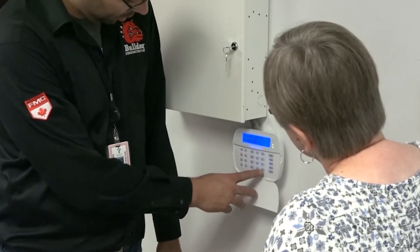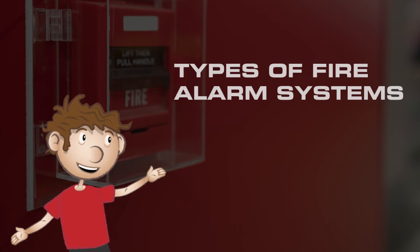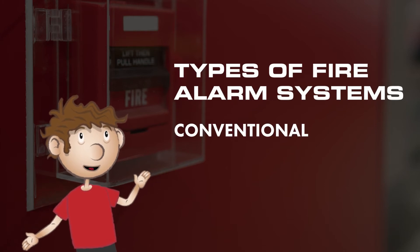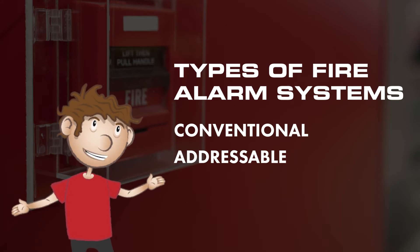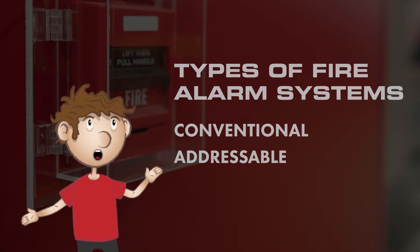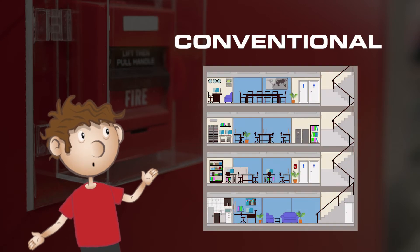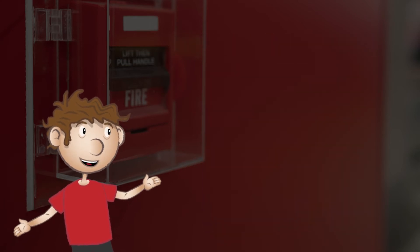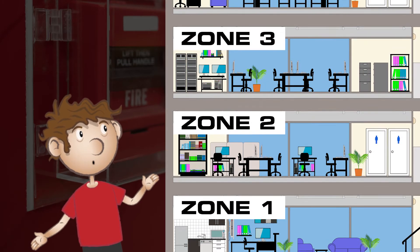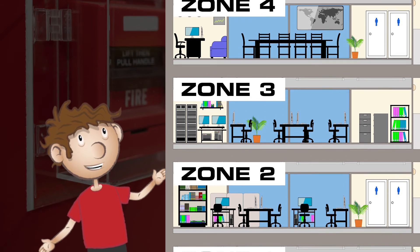Now let's take a look at the different types of fire alarm systems. There are two primary types: conventional and addressable. While both interact with devices and other components in a similar fashion, they differ in how they're connected. A conventional fire alarm system connects the control panel with each device on a separate wire and is typically set up in zones. This way, when a device is activated, the system can identify the zone and help narrow down the location of a potential fire.